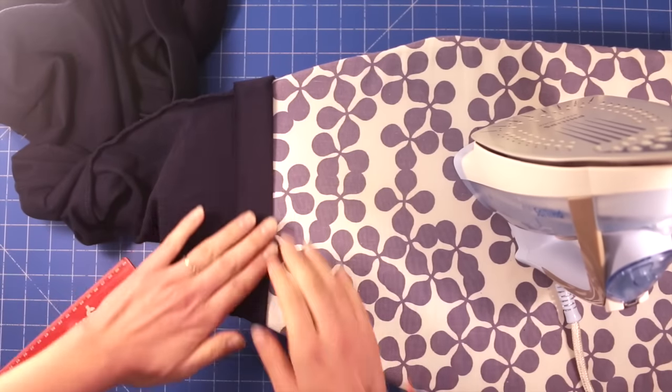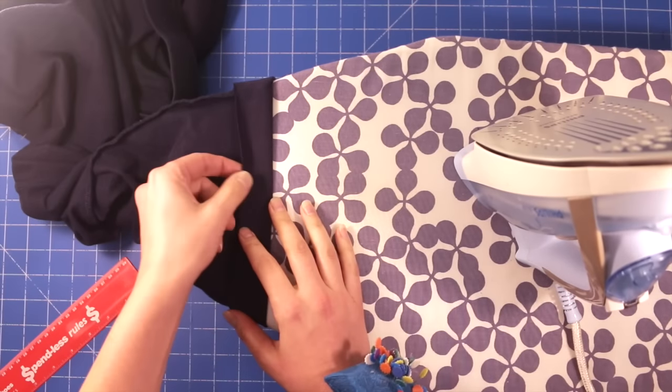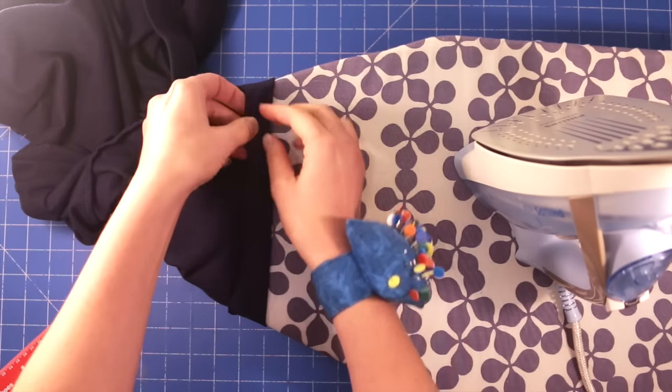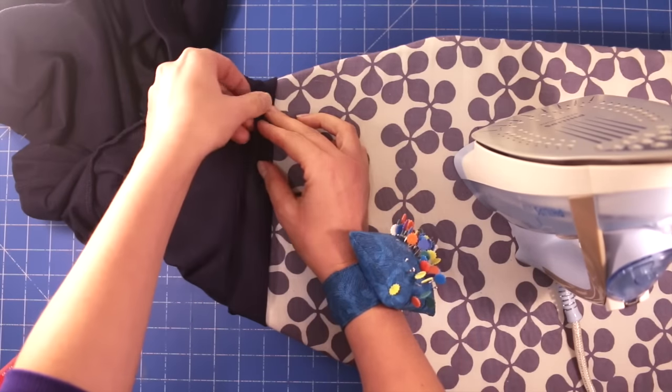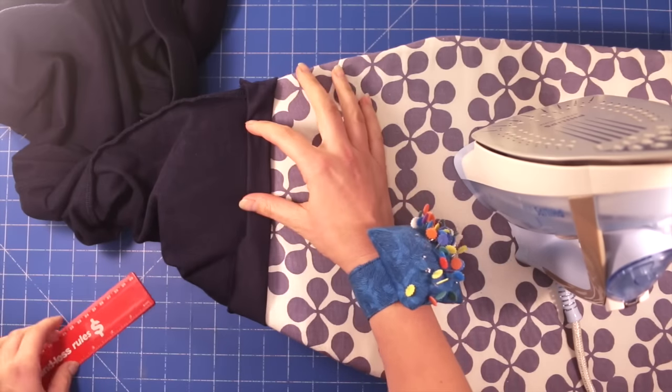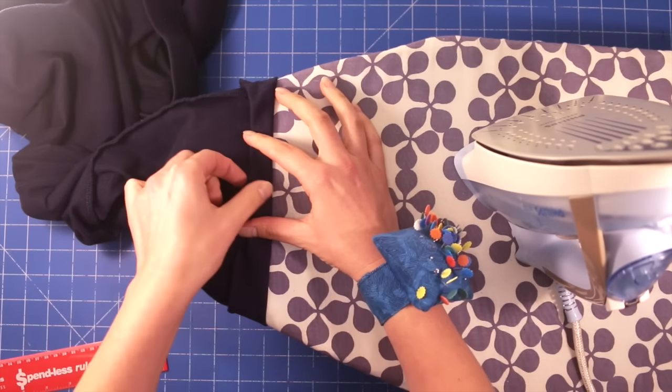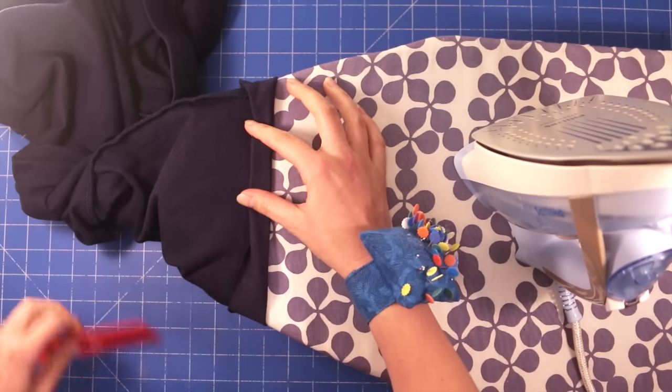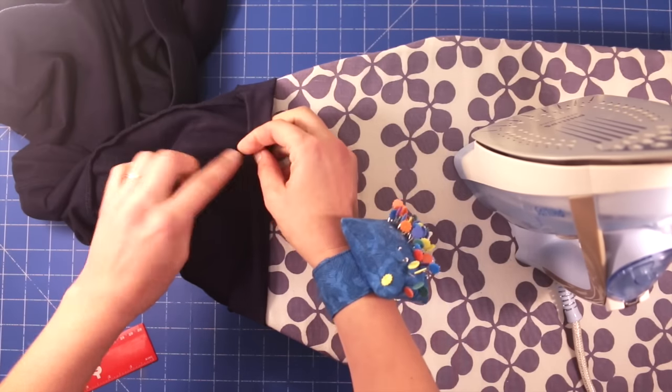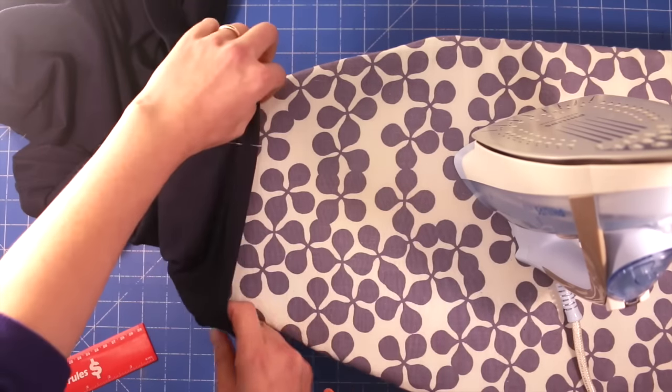So I've ironed all the way around. Now, I've allowed half an inch for tucking my raw edge under so I'm going to do that now. I'm going to tuck under about half an inch. So, I have about three quarters of an inch left. And just a little bit more. So that looks good. Once you've got it the way you want, pop a pin in there to hold it in place and then keep on going all the way around.